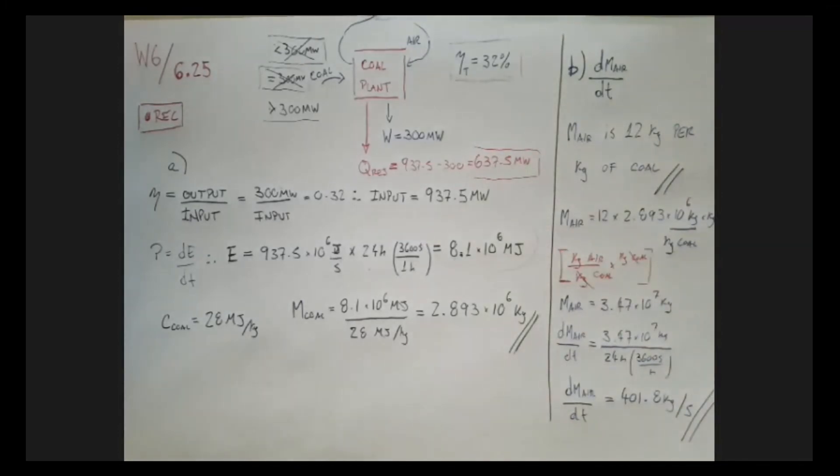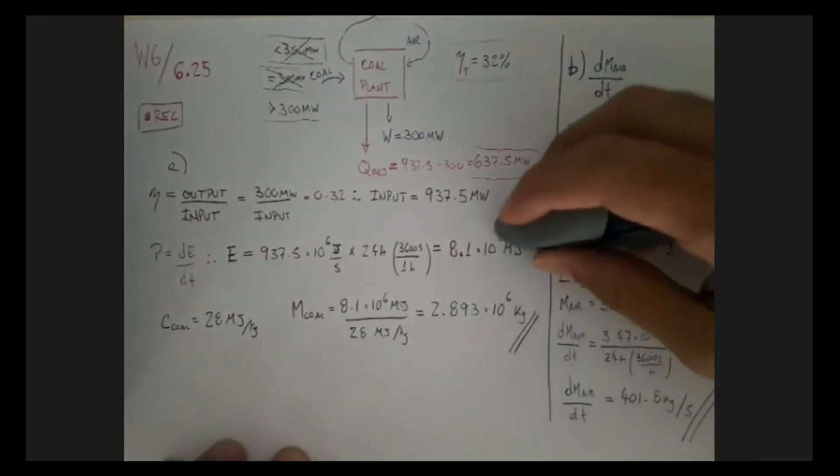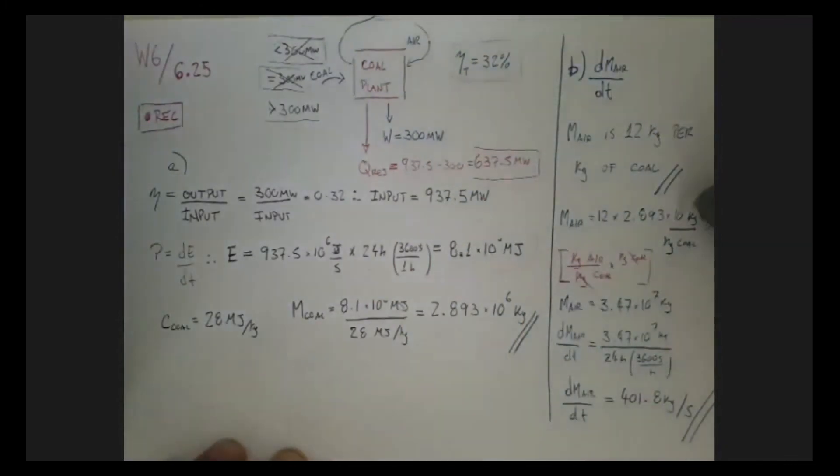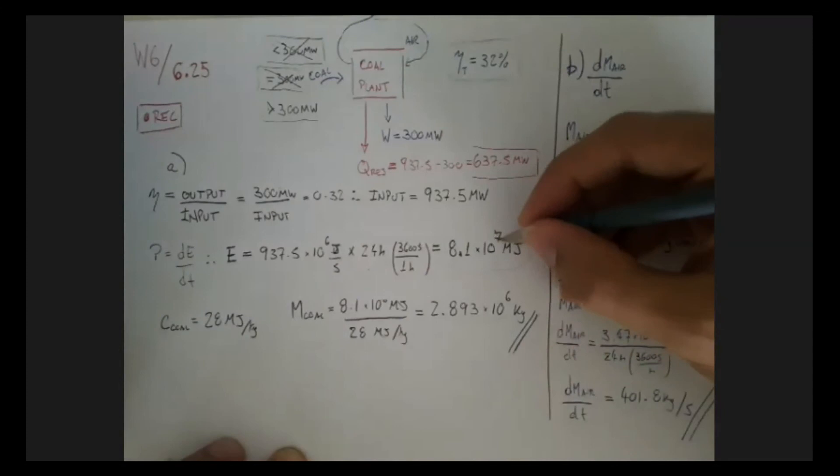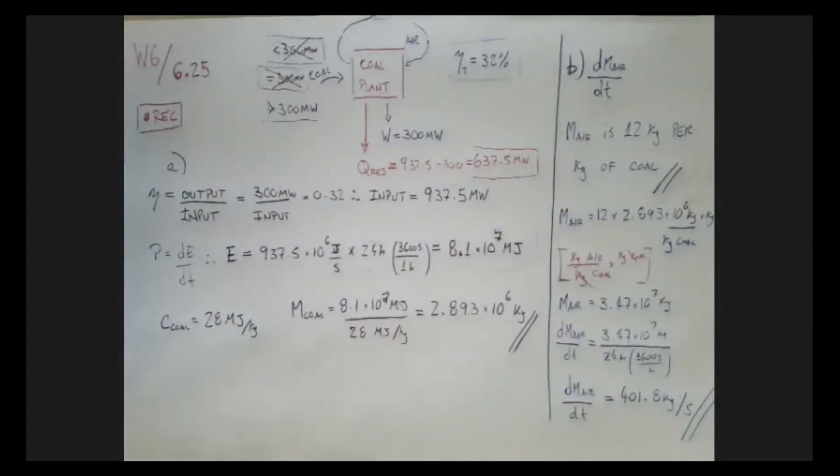I think that's meant to be 8.1 times 10 to the 7. Yes, it is. Indeed. Thank you very much. Over here and then over here as well. And then over here as well. This was right. So this is to the 7th. Not a mistake. To the 7th. Thank you for that. Thank you for that correction.